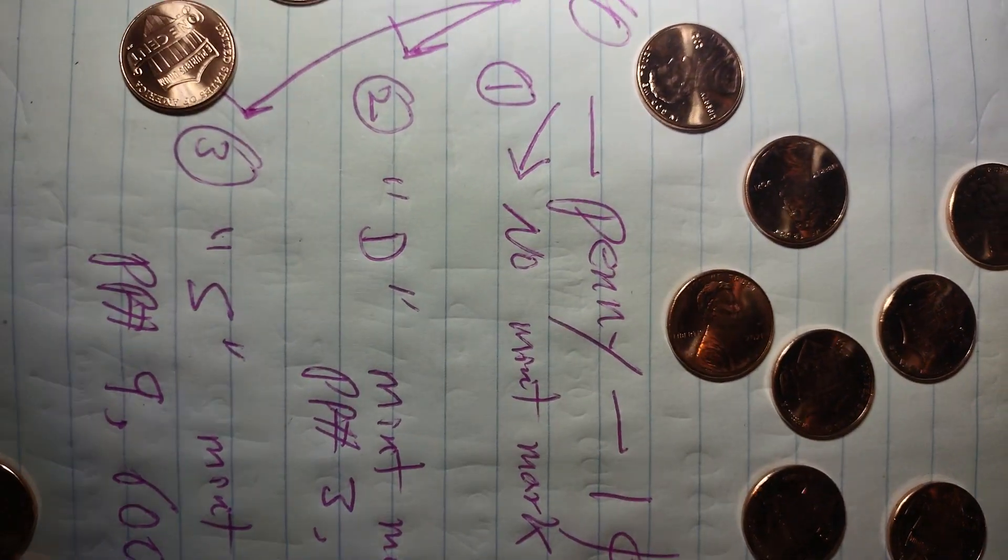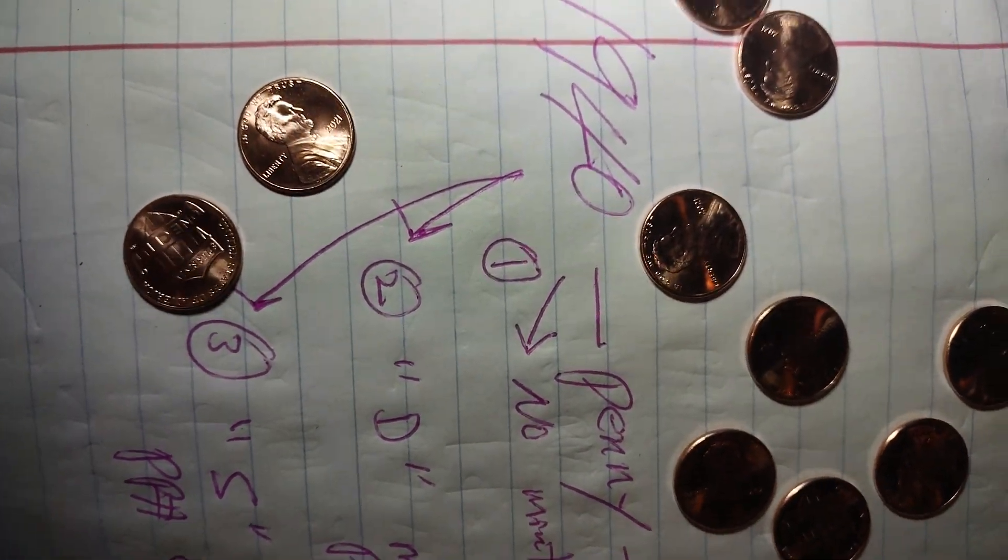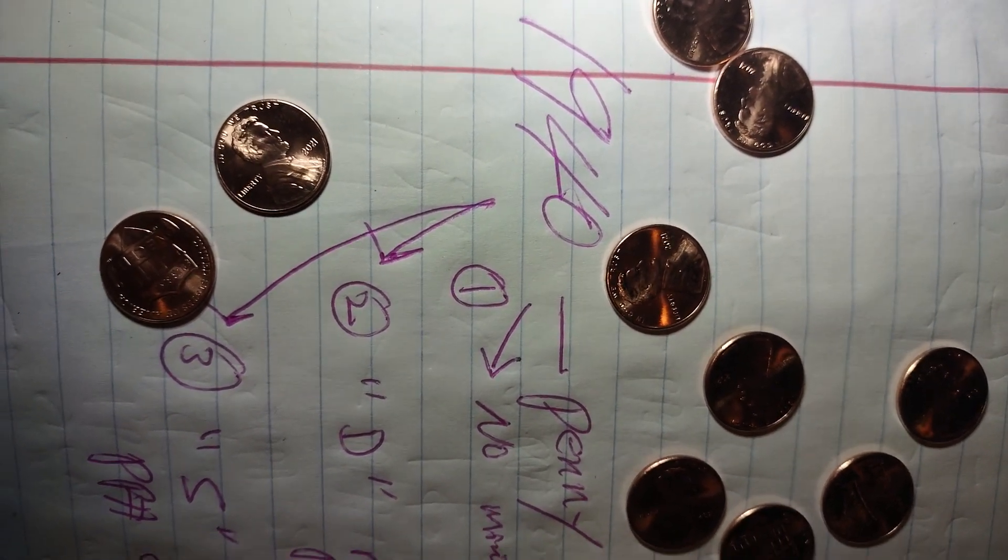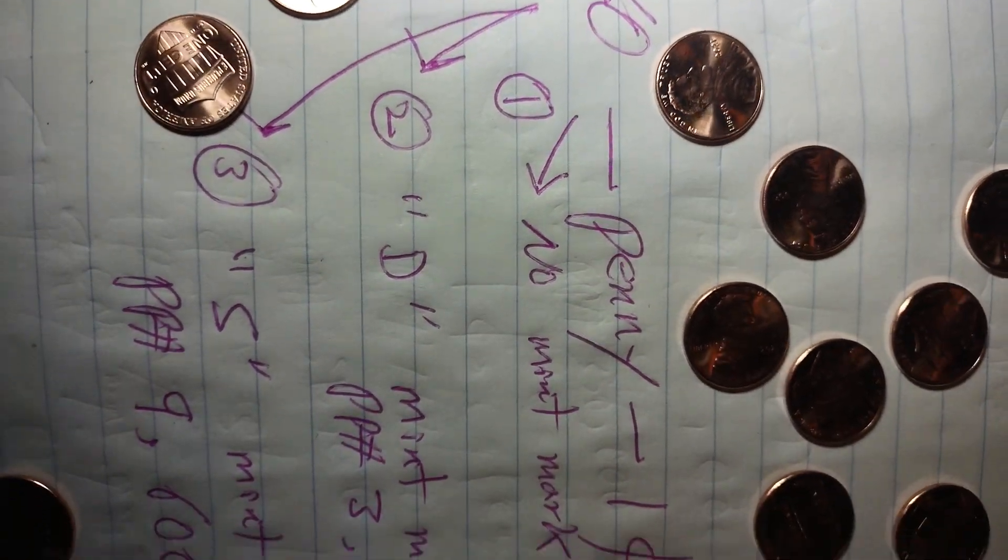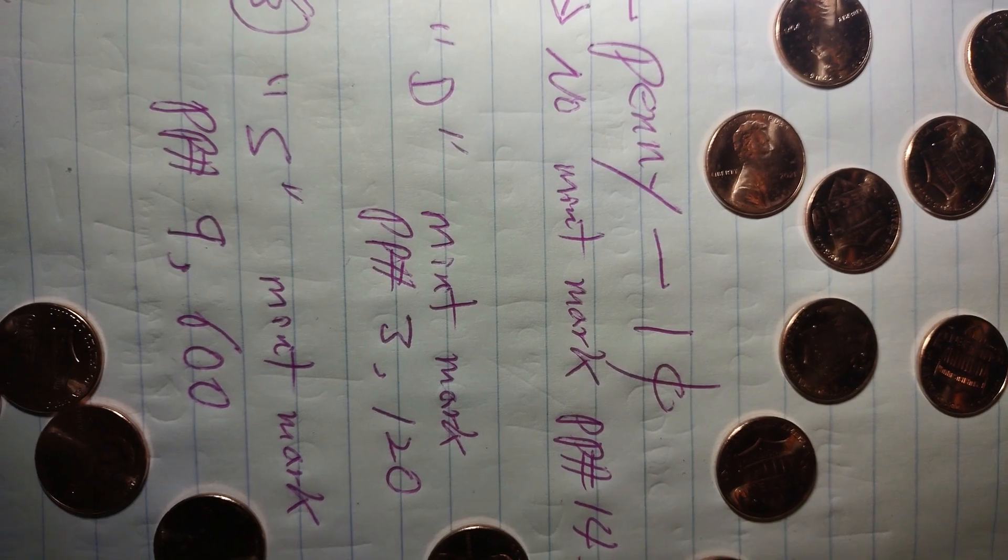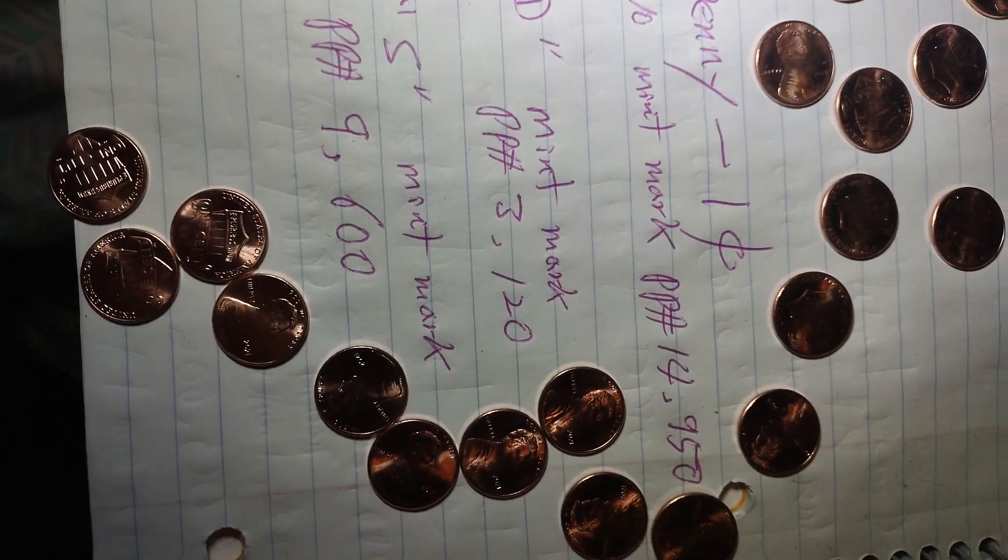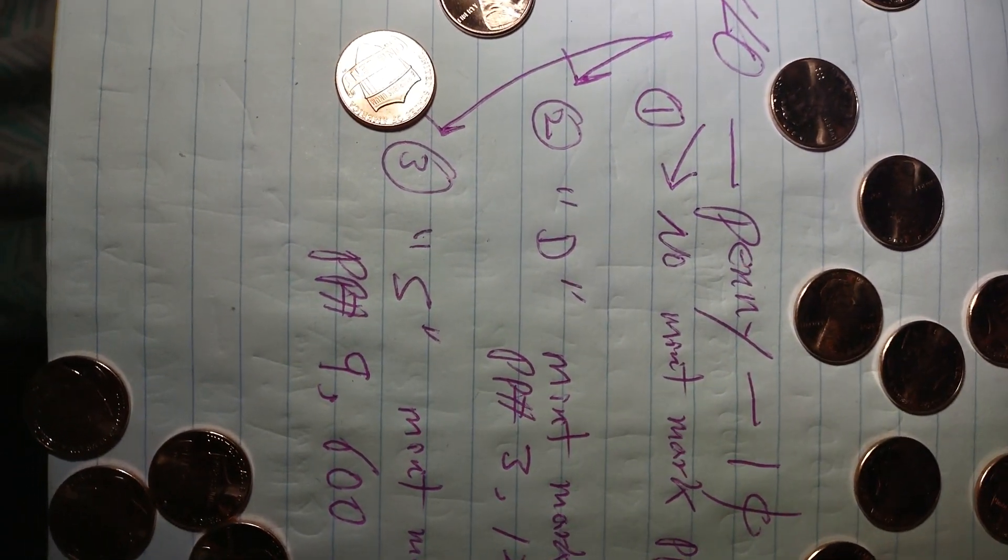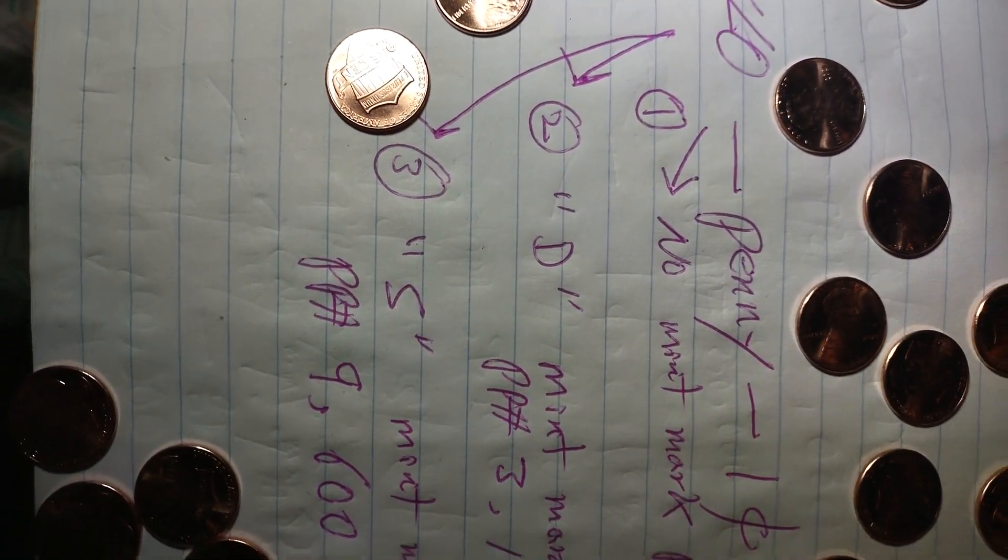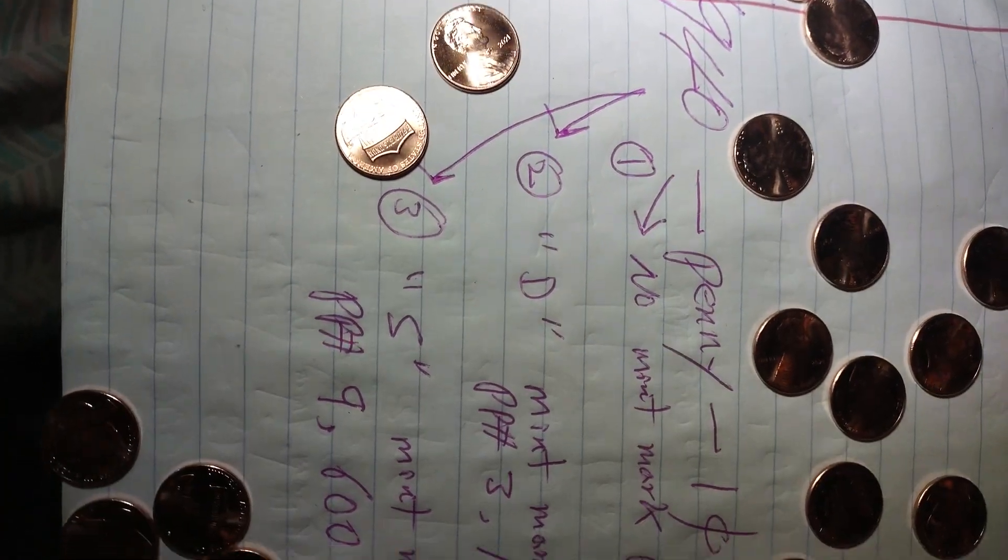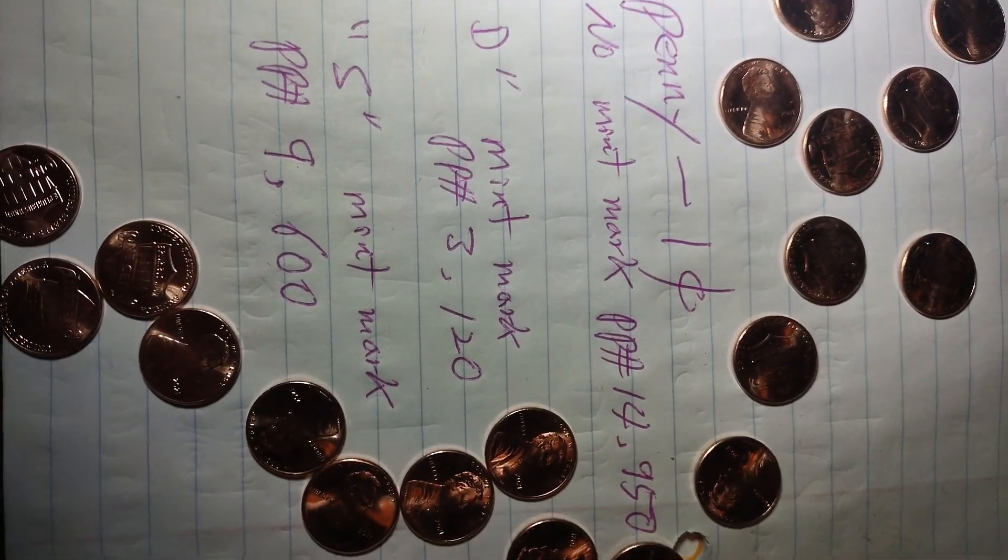Most of the time you can easily find in your pocket change a 1940. Many of them are selling for $3,000 to $14,000 depending on the mint mark: no mint mark, D for Denver, or S for San Francisco.